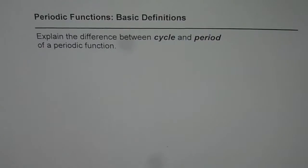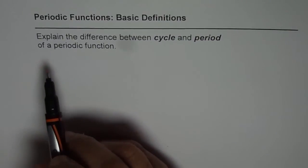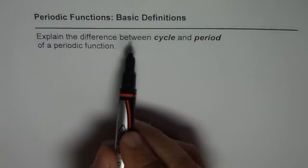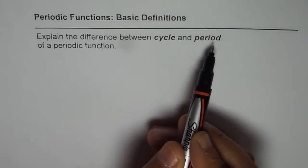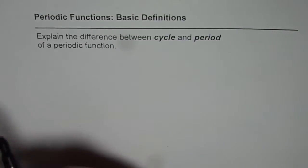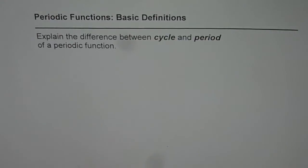Now here is a very important question. The question here is explain the difference between cycle and period of a periodic function. Now I really find it very difficult to explain what is the difference between these two. At times they look similar, right? But they are actually two very different things. Now can you tell me what is the difference between cycle and period of a periodic function?